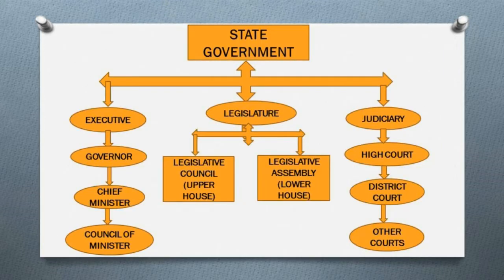The structure of the state government consists of three branches: the executive, the legislature, and the judiciary. The executive has the power to plan — under it are the governor, chief minister, and council of ministers. The legislature means passing a law — it includes the legislative council (upper house) and legislative assembly (lower house). The judiciary relates to the administration of justice, comprising high courts, district courts and other courts.